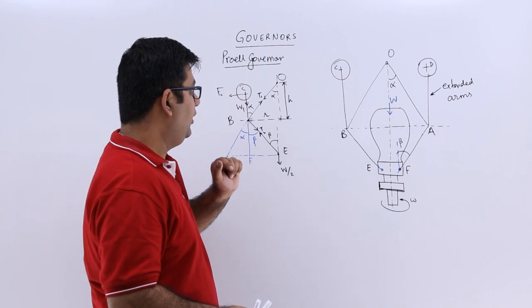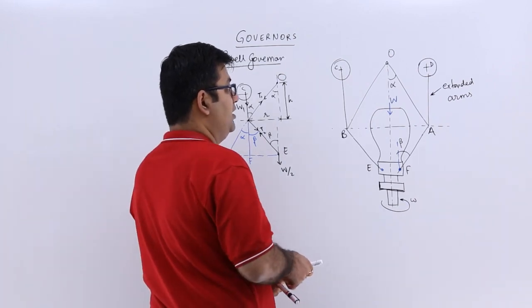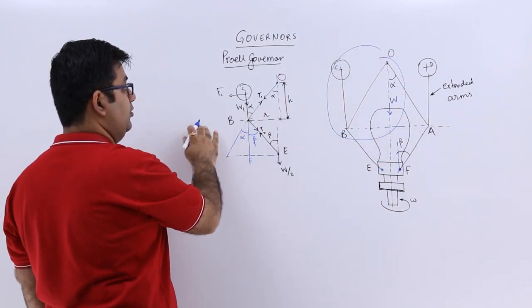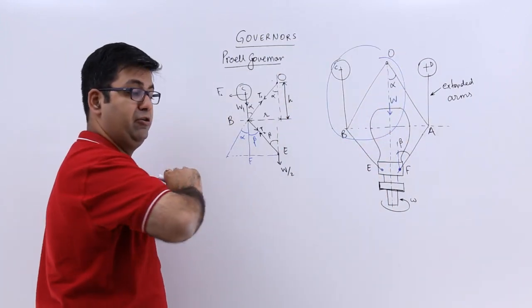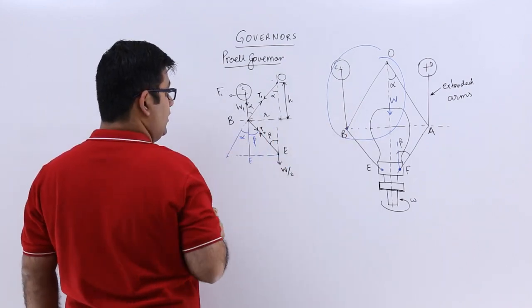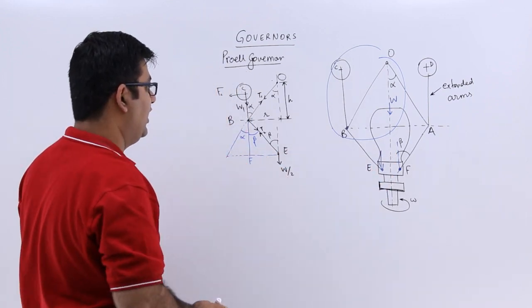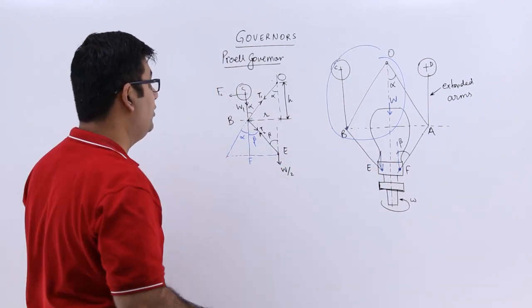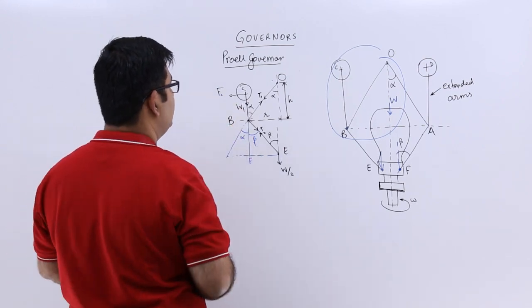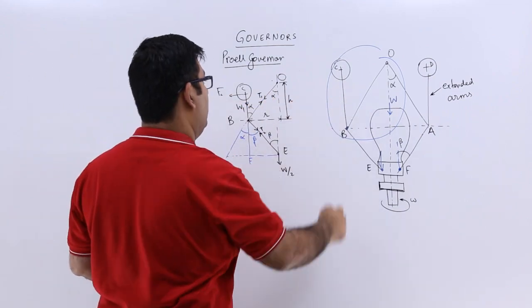So if you have to draw a free body diagram for this part, this will be it. You will have point O, which is the point of pivot, then you have point B, then you have point E. On point E you have half the weight acting, which is on the sleeve. Then you have weight W1 for the balls, and then you have the centrifugal force Fc acting at point C, which is the left ball.